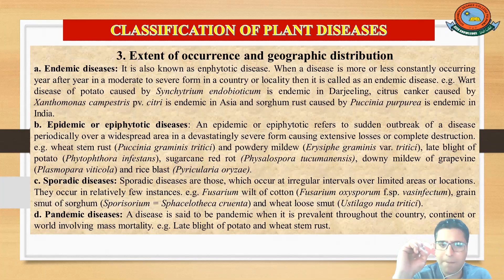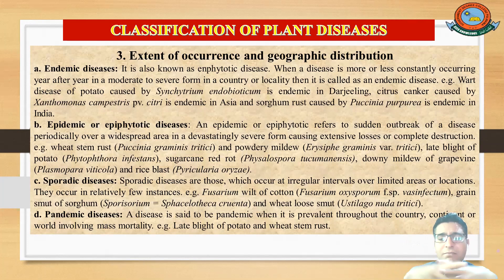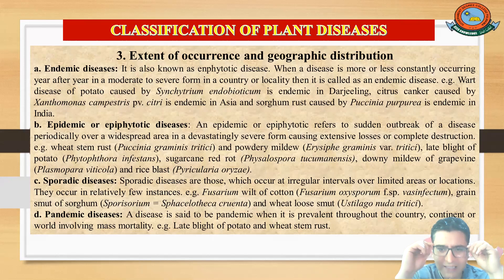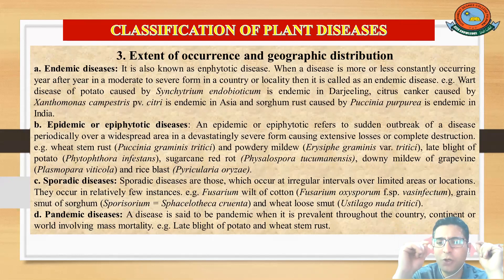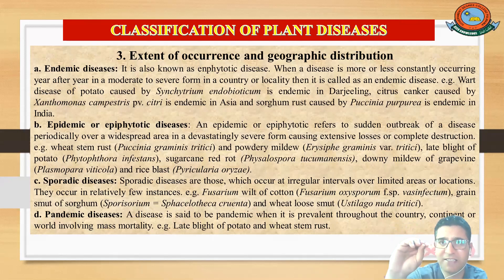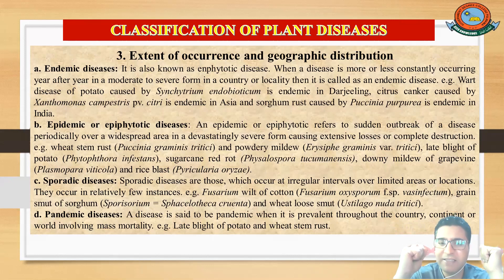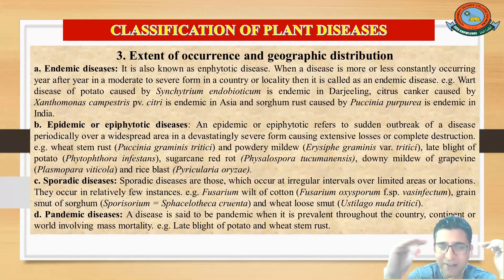The fourth type is pandemic disease. This type of disease is prevalent across a country, continent, or even the entire world. Its key characteristic feature is that it involves mass mortality — deaths occur at a high rate. Examples in the case of plants include late blight of potato and wheat stem rust.